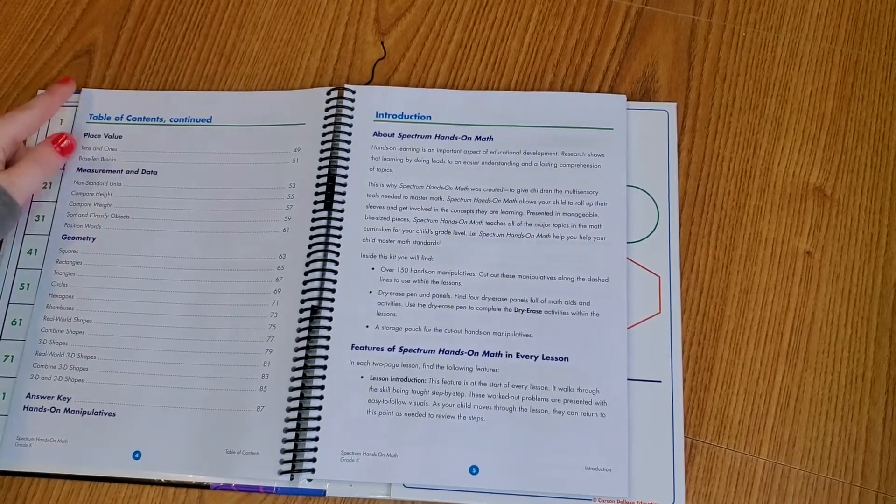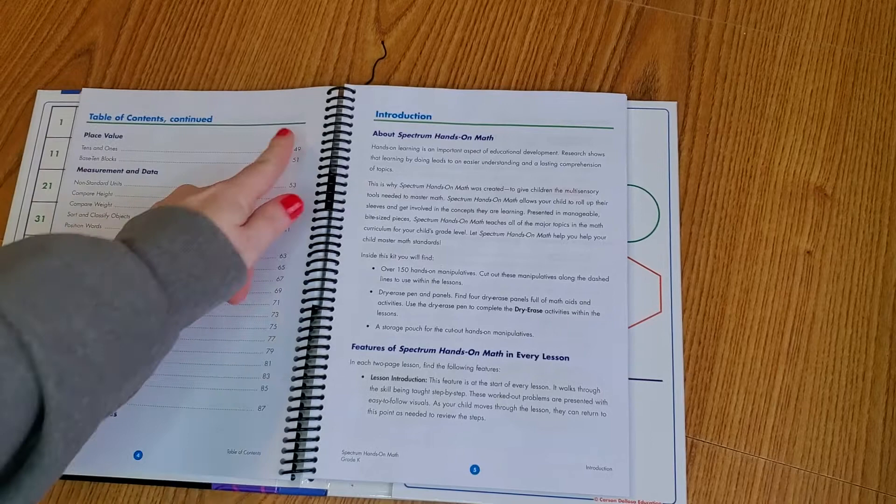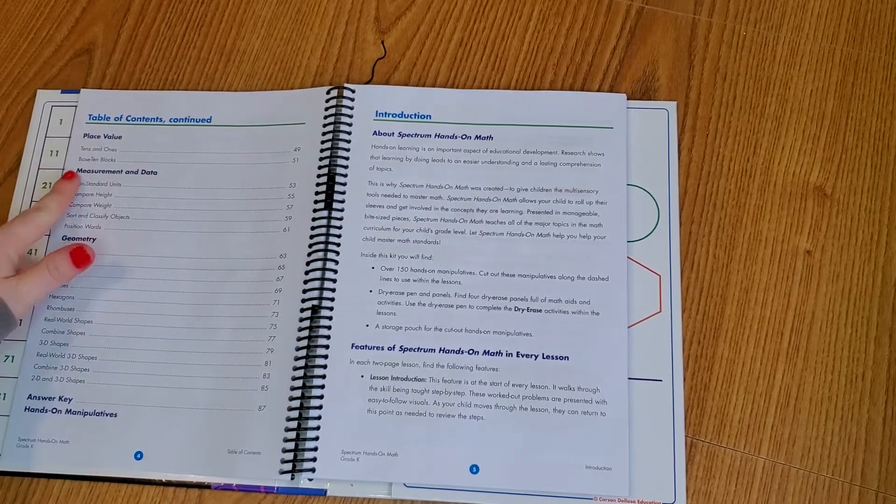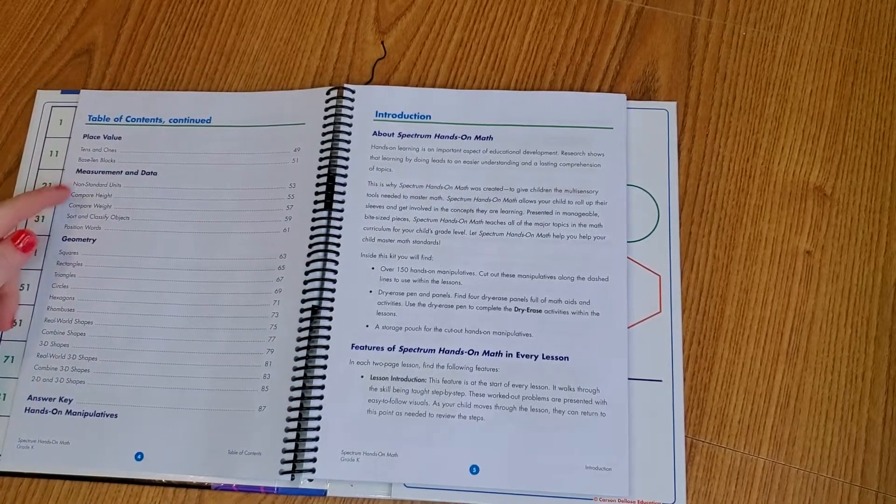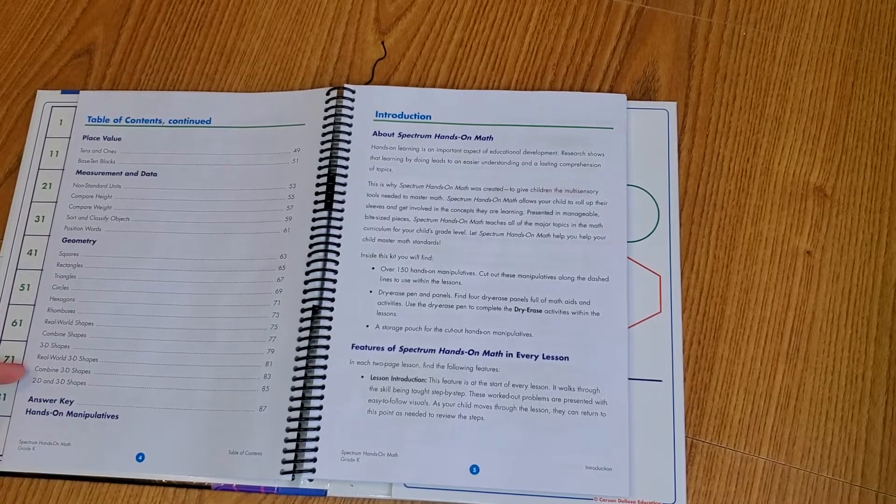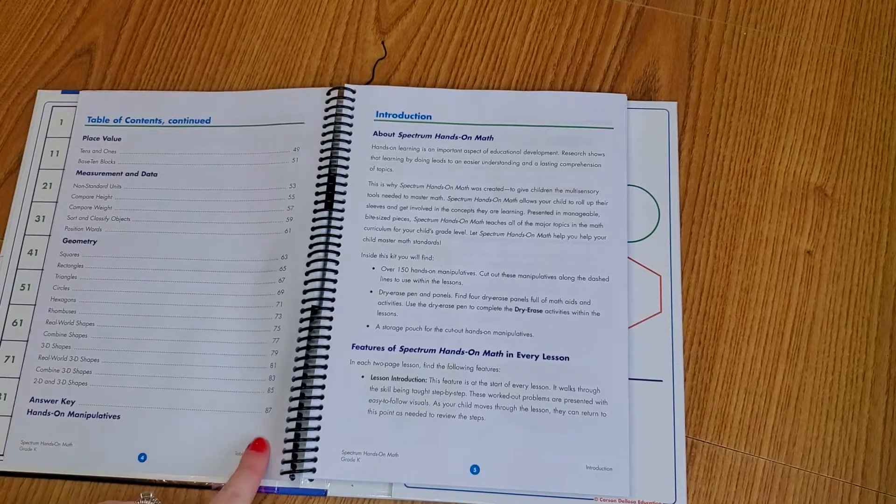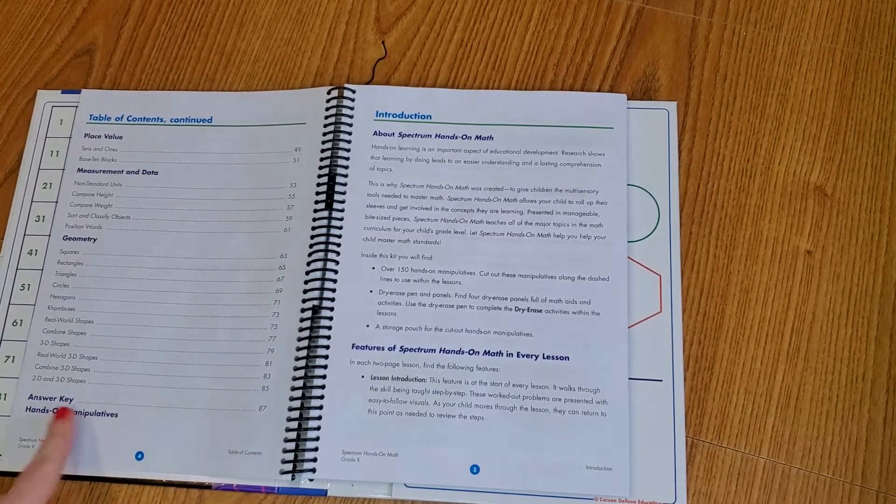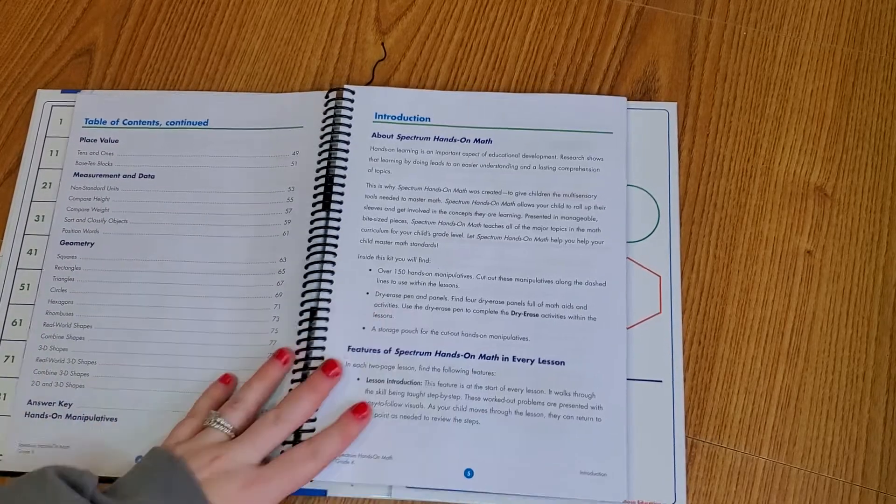And then we have place value, pages 49 to 51. Measurement and data is 53 to 61. Geometry, we have 63 to 85. Then we have an answer key, and in the back of that is the hands-on manipulatives.